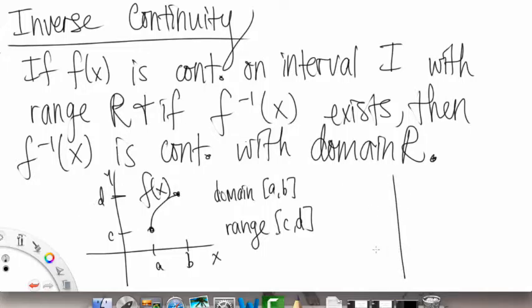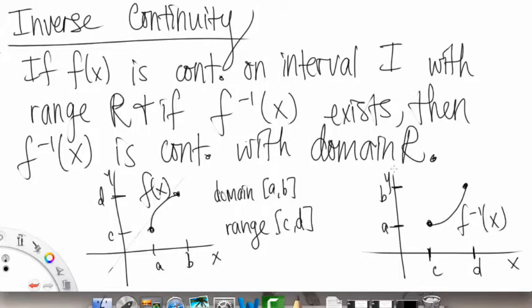And then for our f inverse of x, that would look something like, so here's our y equals x line, so that would look, it would just flip around. So something like that, it would just reflect across the y equals x axis. So when we get, this is actually c and d, those switch, and we get a and b up here on our y-axis, and this is f negative 1.